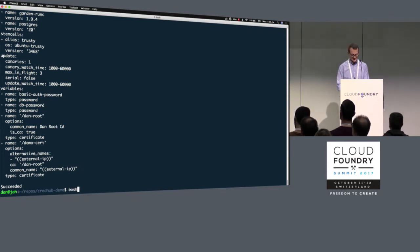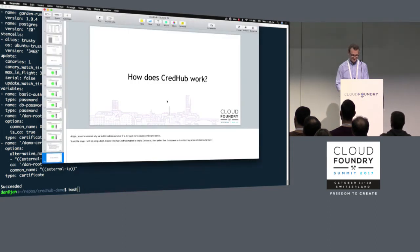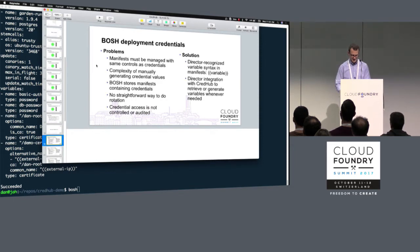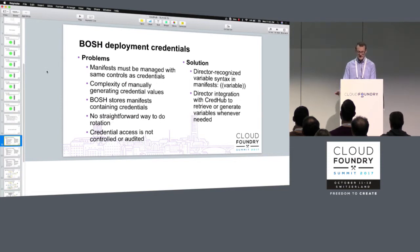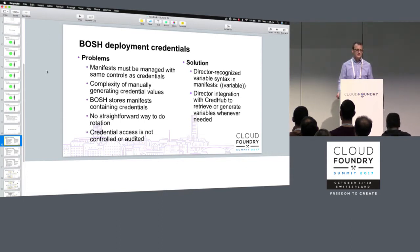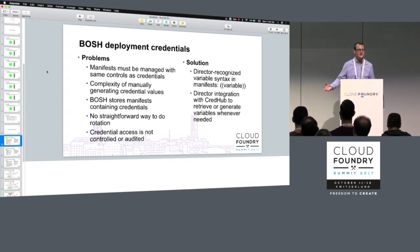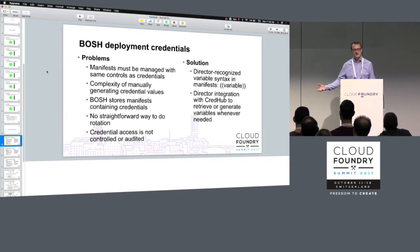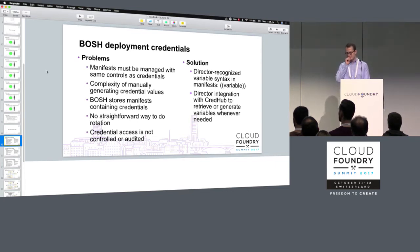So that's the sort of before and after of how you just do this with any Bosh deployment. These are the problems that we identified: manifest must be controlled — we saw how that could change; generation is much simpler; Bosh is no longer storing these. And rotation — it's a subtle variation here, because the fact that we're storing a reference to a credential instead of the actual credential value means you can actually rotate those underlying values without changing the structure of the manifest. So it's pretty simple to rotate something because you just redeploy the exact same manifest with the same references, just rotating the underlying value. And of course, we introduced logging and control as well in the CredHub application.